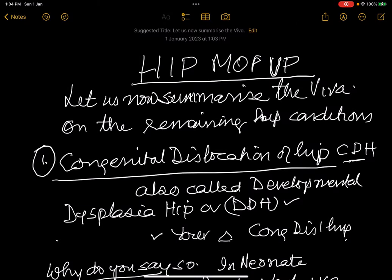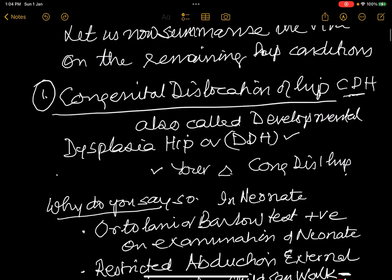Let us mop up the rest of the conditions around the hip and the questions that are asked if you get those cases. The first is congenital dislocation of the hip, also called developmental dysplasia of the hip, because here the acetabular roof is more shallow as compared to normal.